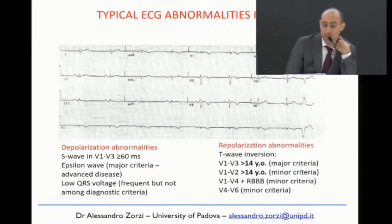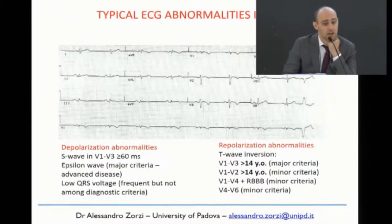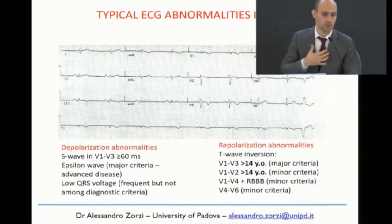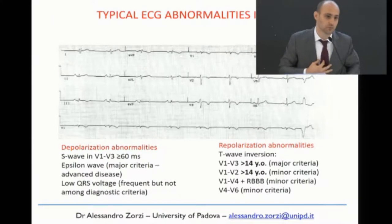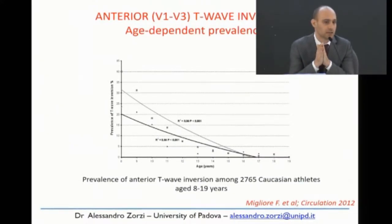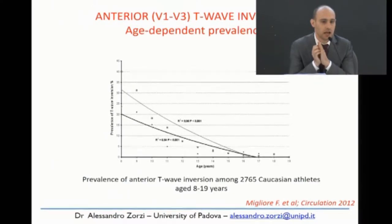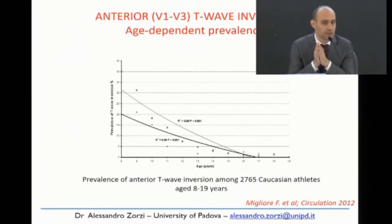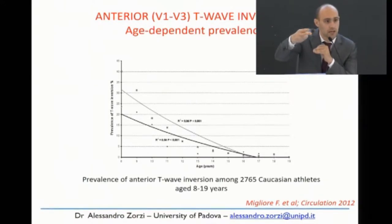The most common ECG abnormality is T-wave inversion in the right precordial leads V1–V3, which explore the right ventricle positioned just behind the sternum. If you find a T-wave inversion in an athlete, the first thing to consider — recapping messages from Professor Peliccia — is whether the athlete has completed pubertal development. In children before puberty, inverted T-waves in precordial leads are quite common, around 15–30%, but they should normalize as puberty progresses.